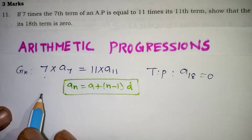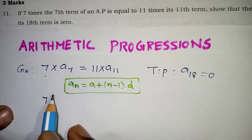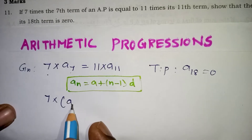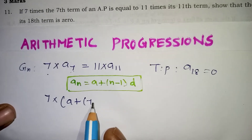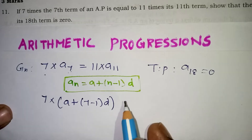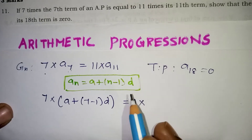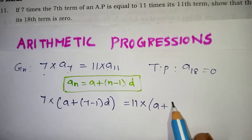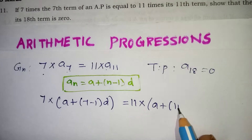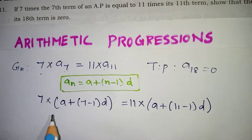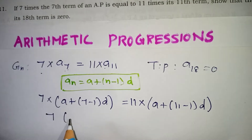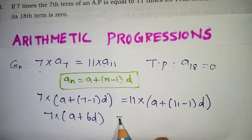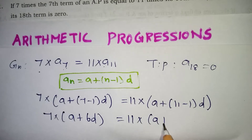For the first side, keep the 7 as it is and expand A7 using the formula: A + (7 - 1)D. On the right side, expand A11 as A + (11 - 1)D. So we get 7 × (A + 6D) = 11 × (A + 10D).